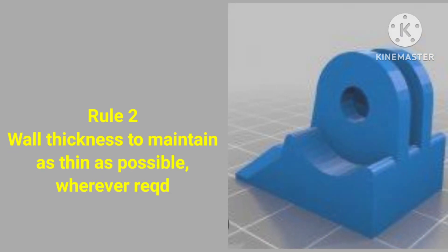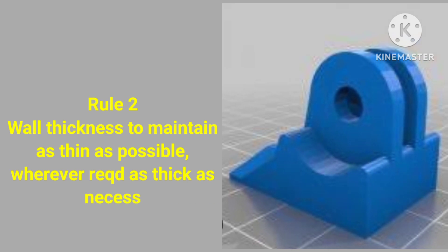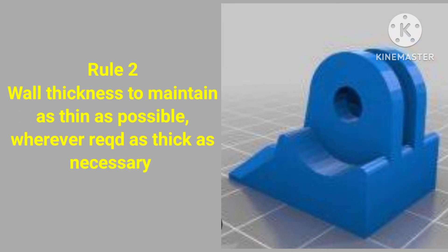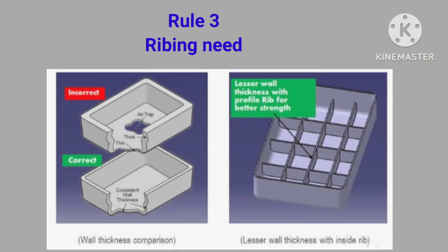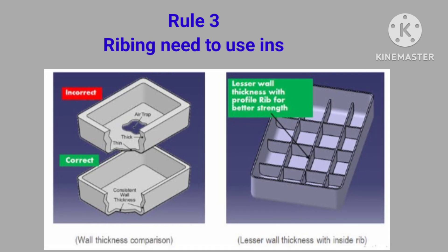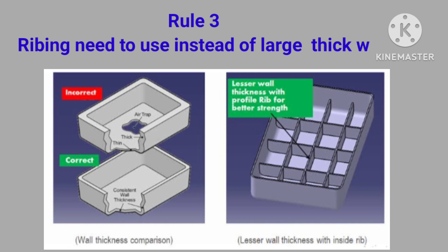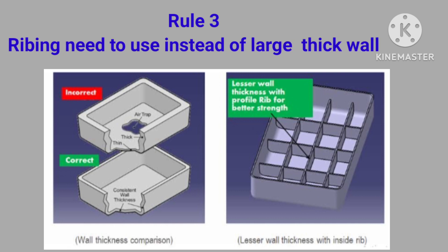Third rule: whenever greater wall thickness is required, need to use ribs, means ribbing instead of greater wall thickness would be preferable. Now we are going to see the fourth rule: during designing of plastic parts, need to avoid sharp corners and focus on providing various radius with different locations.